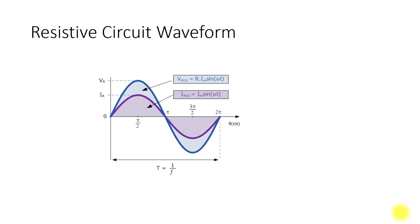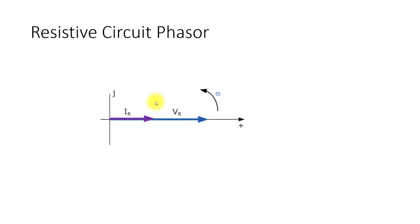First we will look at a resistive circuit. In a resistive circuit the voltage and current are both in phase — when the voltage is at zero the current is also at zero, and at 90 degrees when the voltage is at maximum the current is also at maximum. Both increase and decrease at the same time. You can draw this as two phasors — one for current and one for voltage — both in phase, rotating with angular speed omega equal to 2πf.